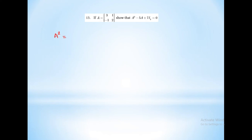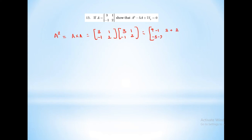Last sum: given A equals 3, 1, minus 1, 2, show that A squared minus 5A plus 7I₂ equals 0. First step, A squared equals A into A, which is 3, 1, minus 1, 2 multiplied by 3, 1, minus 1, 2, which equals 9 minus 1, 3 plus 2, minus 3 minus 2, minus 1 plus 4, which equals 8, 5, minus 5, 3. Next, 5A equals 5 times 3, 1, minus 1, 2, which equals 15, 5, minus 5, 10.